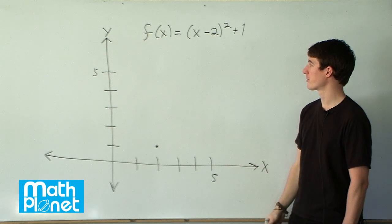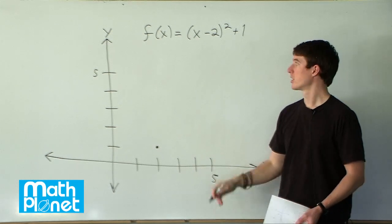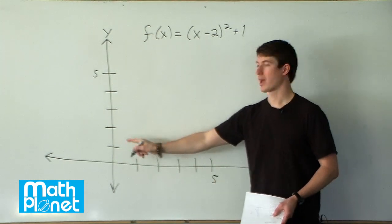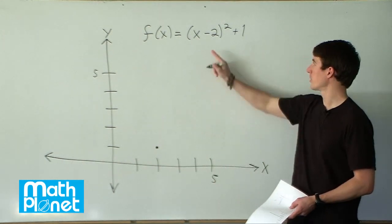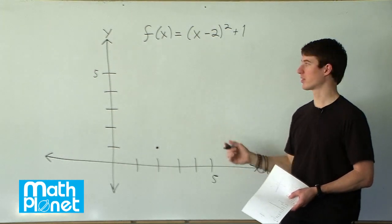From here it's pretty straightforward. You can just plug in any points that you want to see where it might land. For example, if we plug in x equals 0, we see that we have negative 2 squared plus 1, so that's 4 plus 1, or 5.